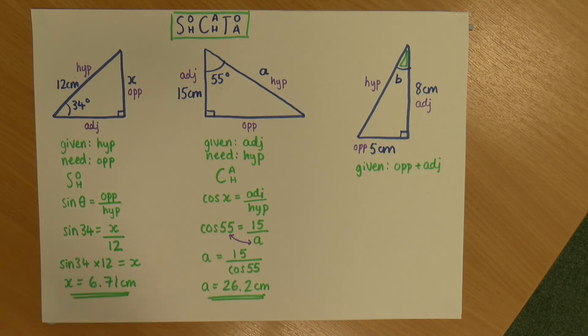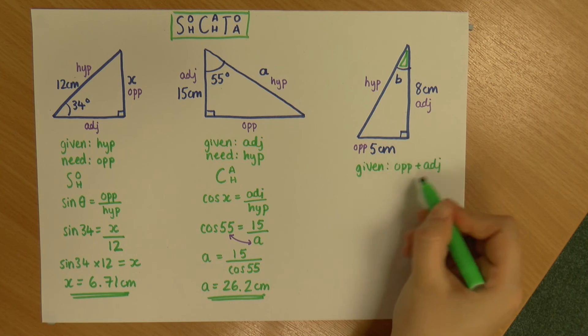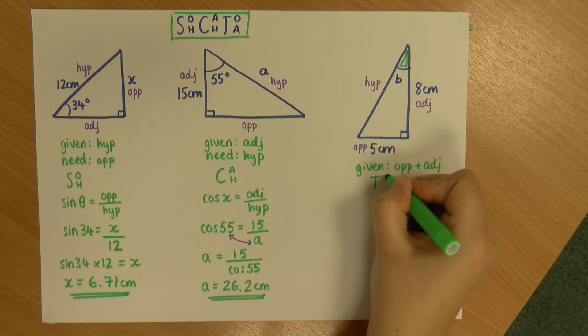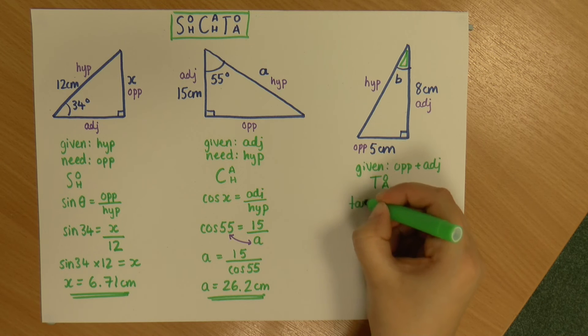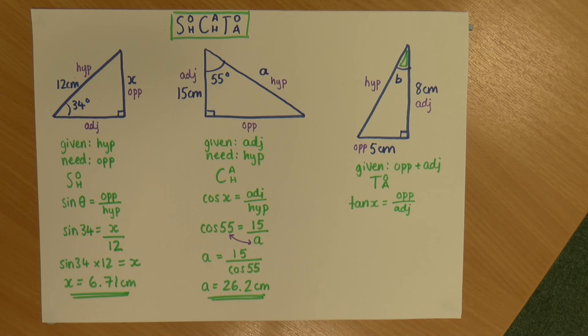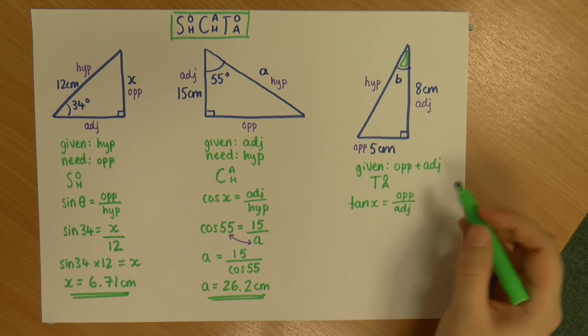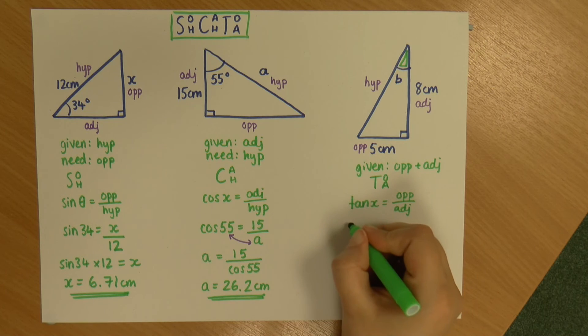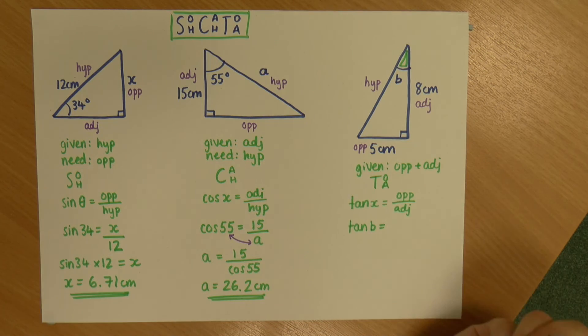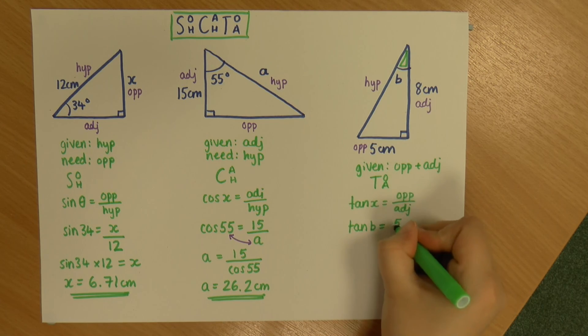So which of the trigonometric functions uses the opposite and adjacent? Well, it's this last one, opposite adjacent. It's tan, TOA, or again, you may see it written tan x is opposite over adjacent. Okay, so like with the others, I'm going to start off by popping some numbers in. So this time, my angle is just B. I don't know it yet. My opposite is 5. And my adjacent is 8.